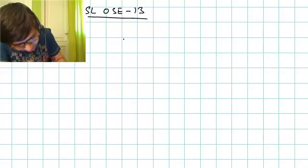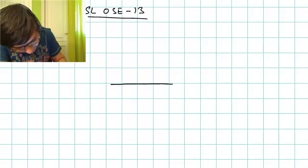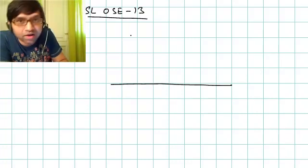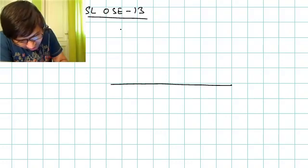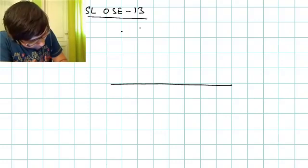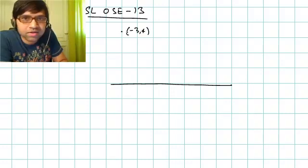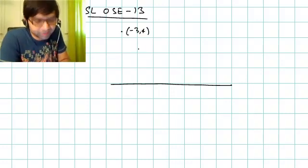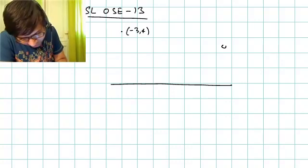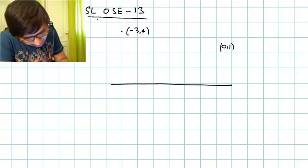This is a straight line objective, solved example question number 13. In this question, there is a man that starts from a point whose coordinates are (-3, 4). He starts from this point, travels and reaches at a point whose coordinates are (0, 1).